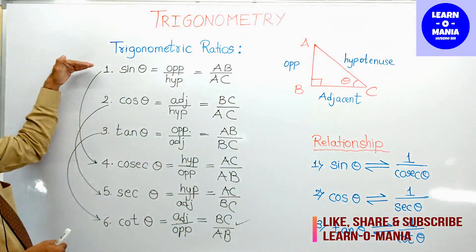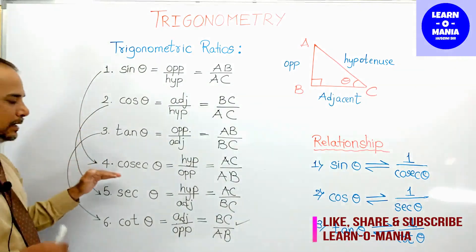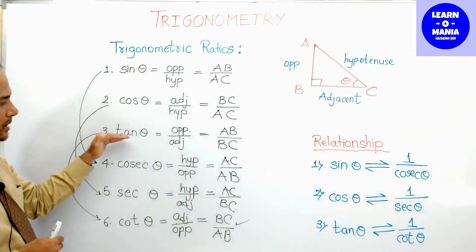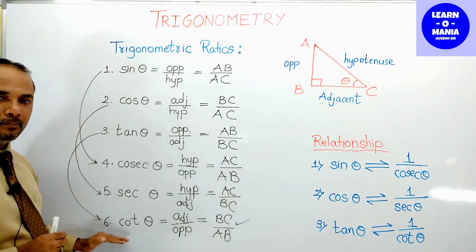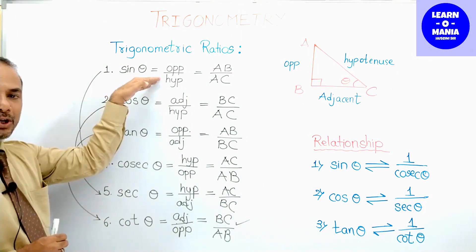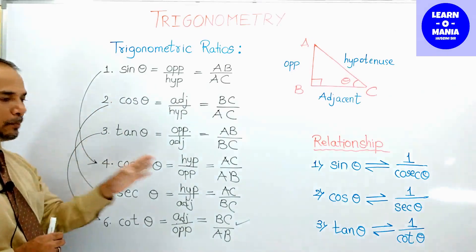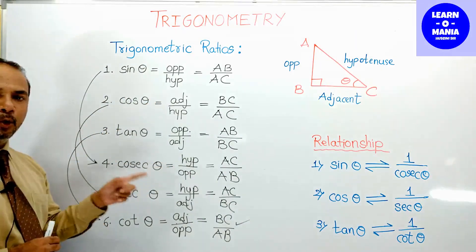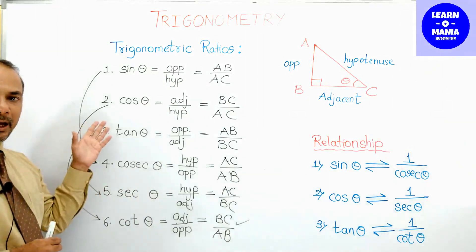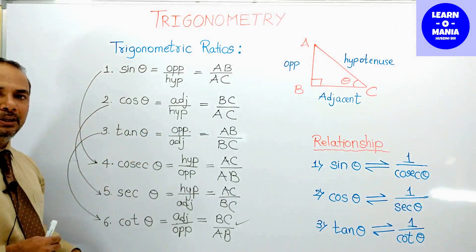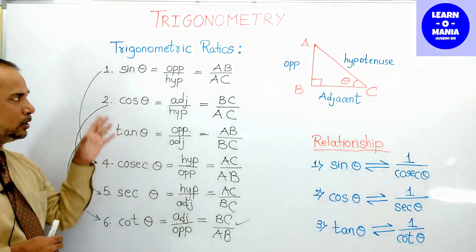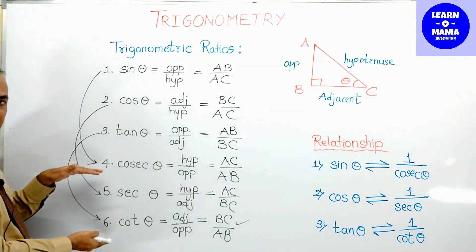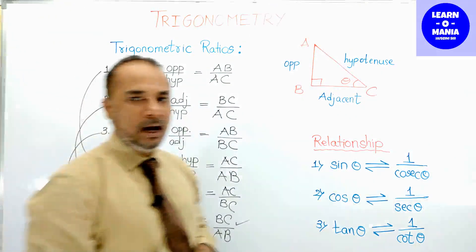Let me repeat: sin's exact inverse is cosec. Cos's exact inverse is sec. Tan's exact inverse is cot. So if sin theta is opposite upon hypotenuse, then cosec theta is hypotenuse upon opposite. If cos theta is adjacent upon hypotenuse, then sec theta is hypotenuse upon adjacent. If tan theta is opposite upon adjacent, then cot theta is adjacent upon opposite.